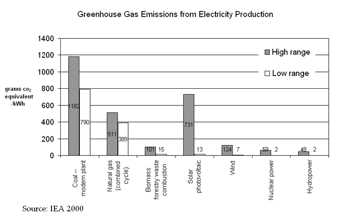Projections of future greenhouse gas emissions are highly uncertain. In the absence of policies to mitigate climate change, GHG emissions could rise significantly over the 21st century. Numerous assessments have considered how atmospheric GHG concentrations could be stabilized — the lower the desired stabilization level, the sooner global GHG emissions must peak and decline. GHG concentrations are unlikely to stabilize this century without major policy changes.